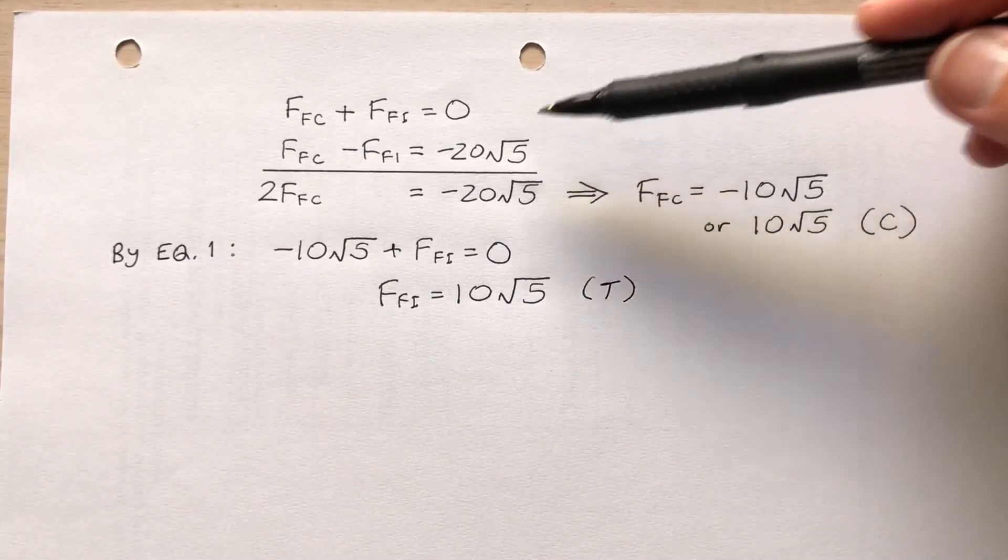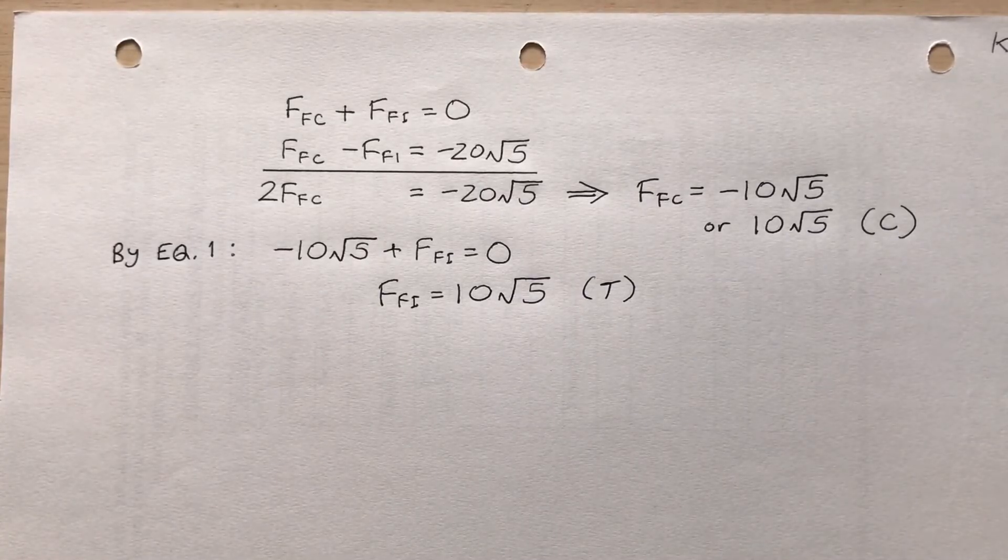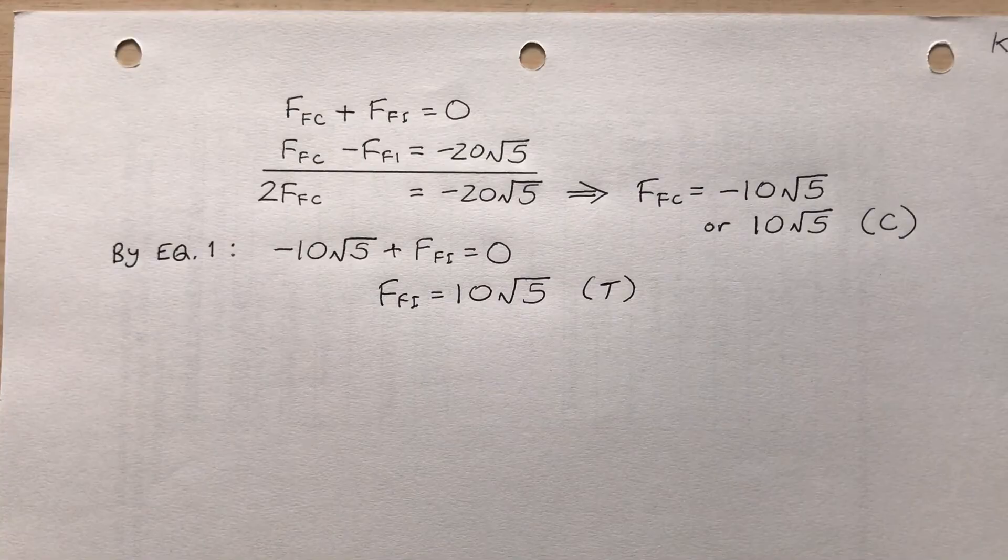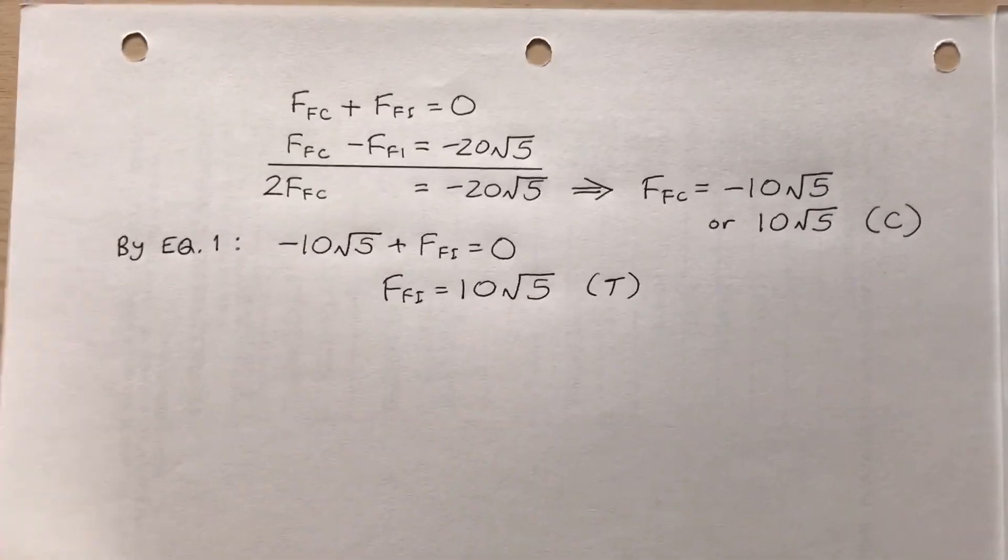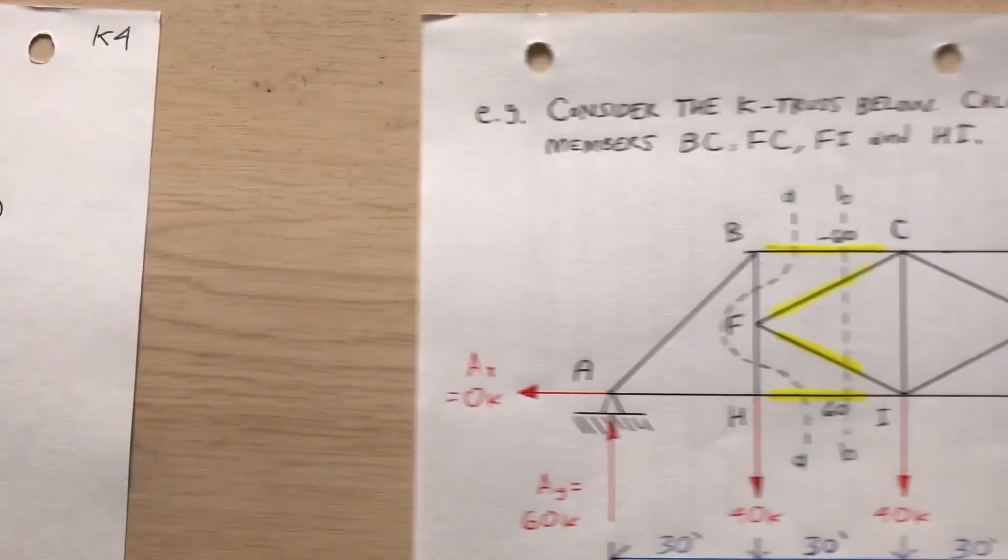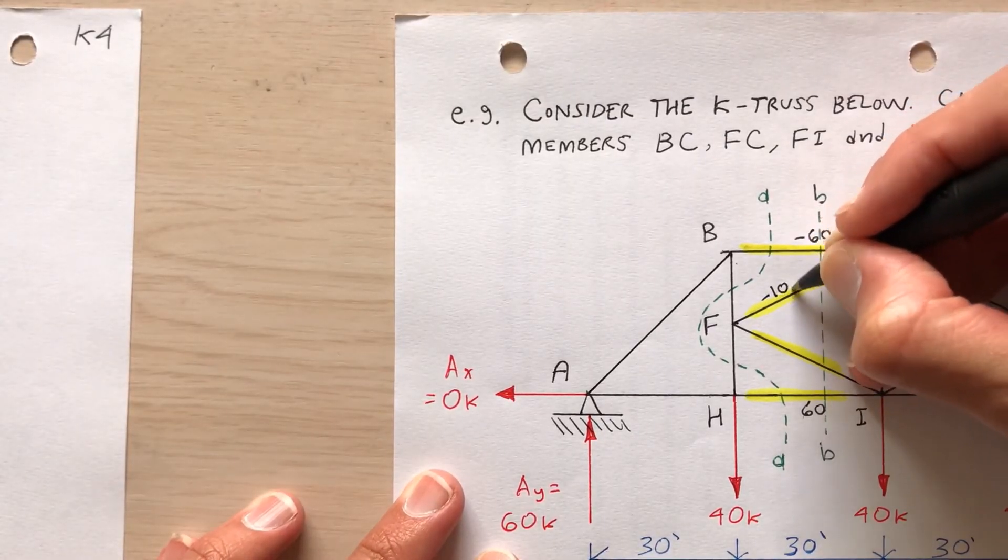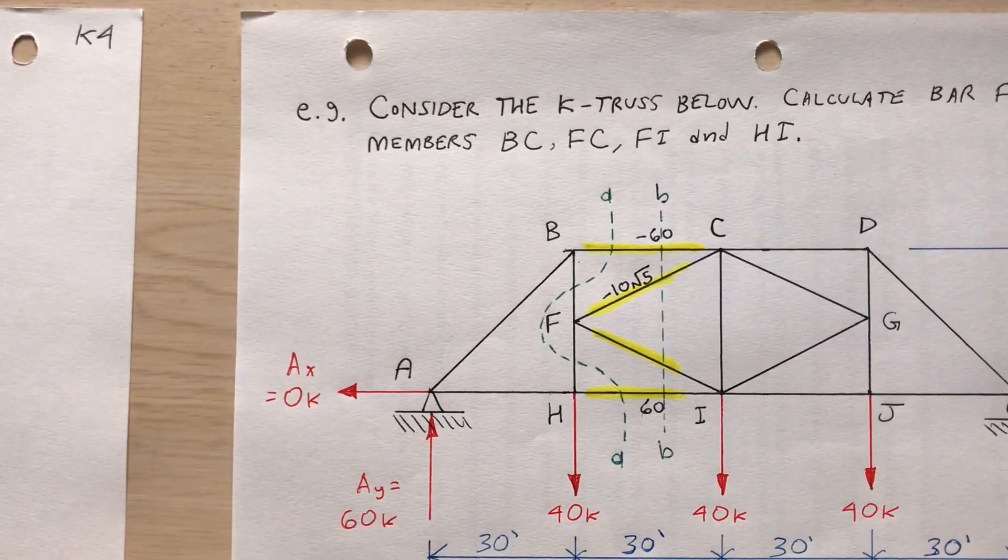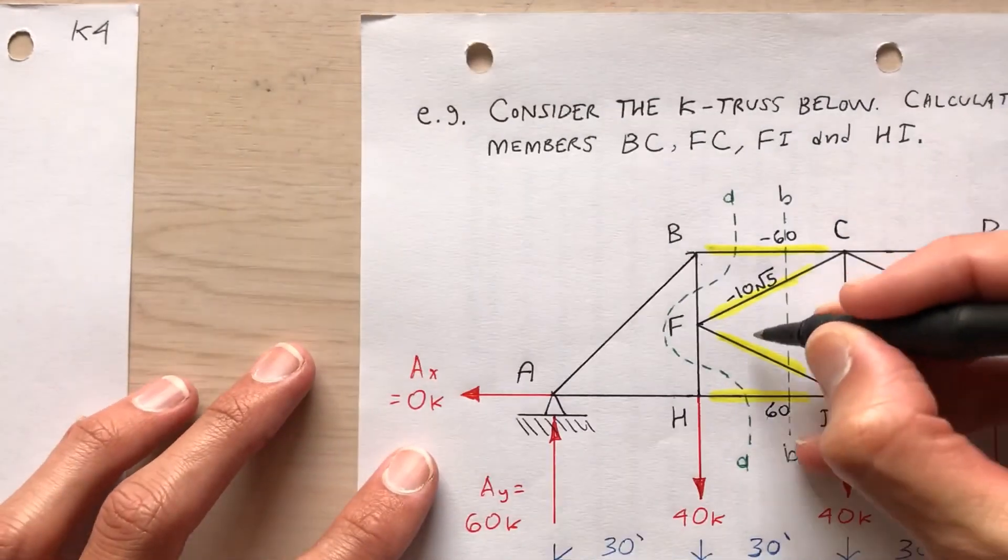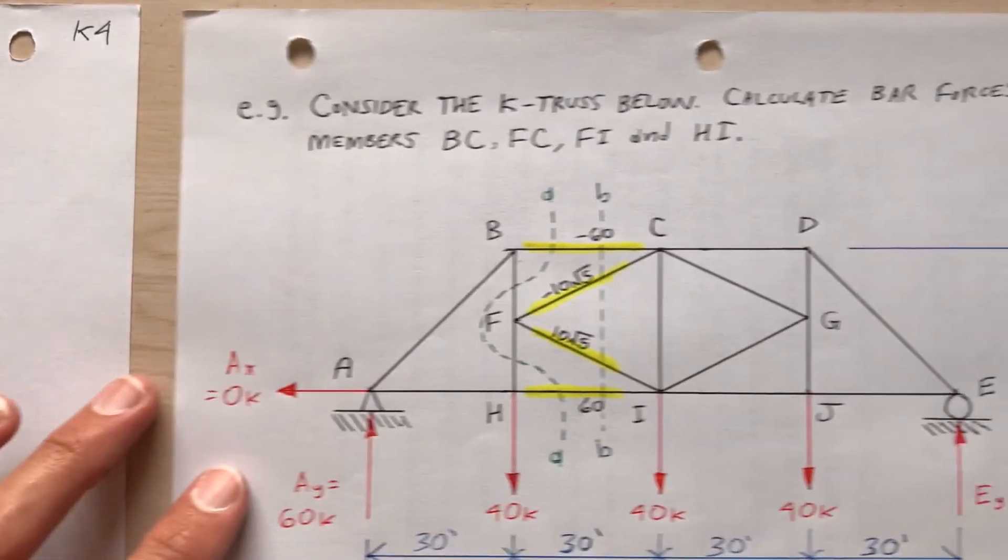So I solve equations one and two simultaneously. I can just simply add them together like I am here. So I find f sub FC, 10 square root of five, that's in compression, and f sub FI is 10 square root of five in tension. So I can write those on my original drawing. F sub FC, negative 10 square root of five. Right here. That's in caps. And then f sub FI is 10 square root of five.